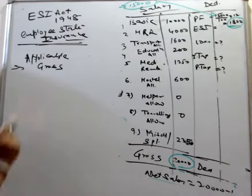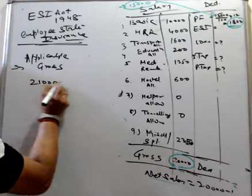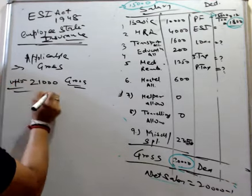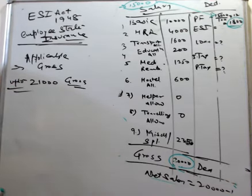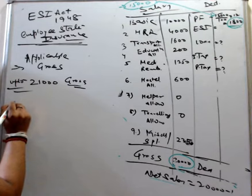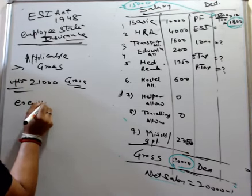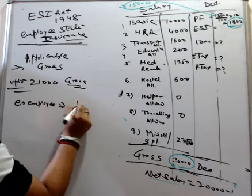The applicable 21,000 gross is up to 21,000. If 21,000 is applicable, not applicable. So the small employee vote that will contribute.